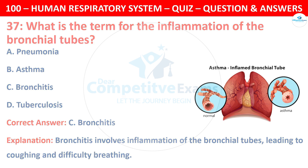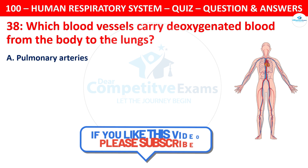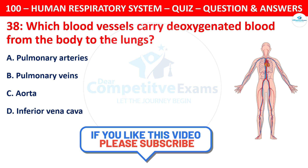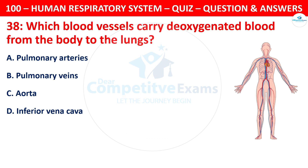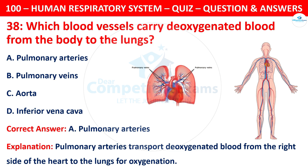Question 38: Which blood vessels carry deoxygenated blood from the body to the lungs? The options are: pulmonary arteries, pulmonary veins, aorta, or inferior vena cava. The correct answer is A — pulmonary arteries. Pulmonary arteries transport deoxygenated blood from the right side of the heart to the lungs for oxygenation.